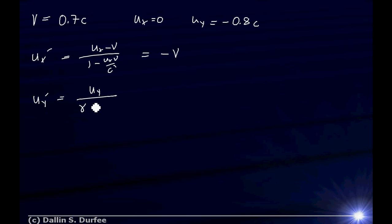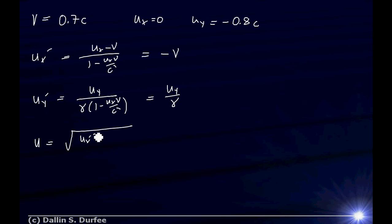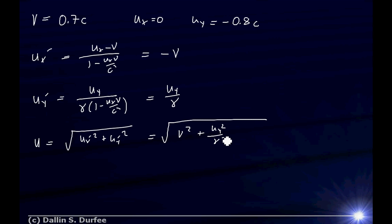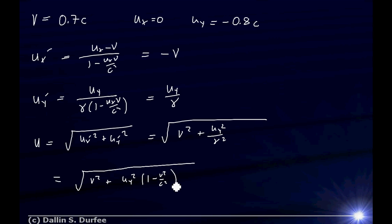The Y component is UY divided by gamma times (1 minus UX·V over C squared). Since UX is 0, this simplifies to just UY over gamma. So the total magnitude of the velocity is the square root of UX prime squared plus UY prime squared, which is the square root of V squared plus UY squared over gamma squared. And 1 over gamma squared is just 1 minus V squared over C squared. We know V and UY — plug those in to get your numbers.